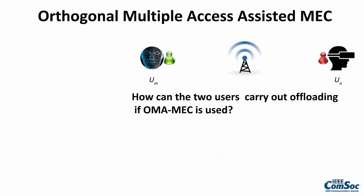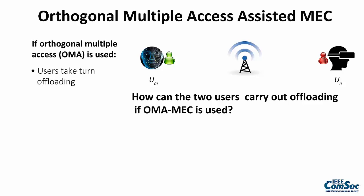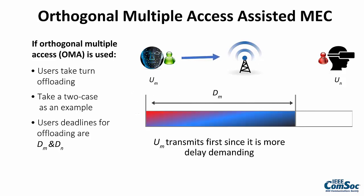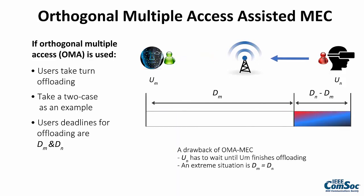A conventional MEC uploading strategy is to apply OMA, or so-called multiple access, which means that users will take their turns to do uploading. For example, if there are two users, one user will start uploading first during the first T seconds. Afterwards, the second user starts uploading. A drawback of this approach is that the second user might have a very small amount of time to do uploading — just think about an extreme case where the users have similar deadlines.